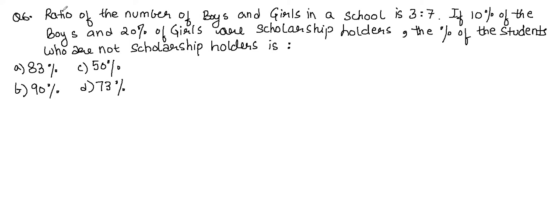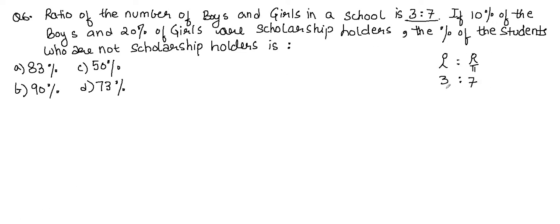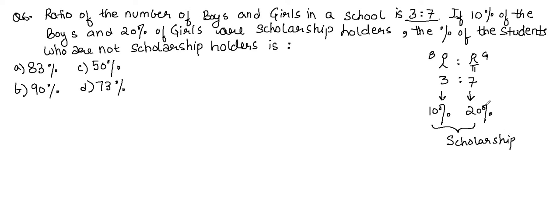Question number six, which was also asked in previous years' papers: the ratio of boys to girls in a school is 3:7. If 10% of the boys and 20% of the girls are scholarship holders, you have to find what percentage of students do not have scholarships.